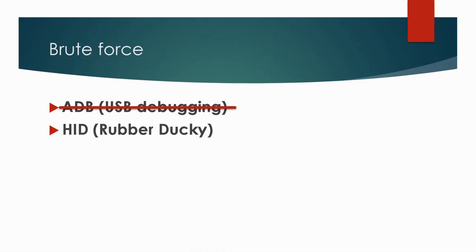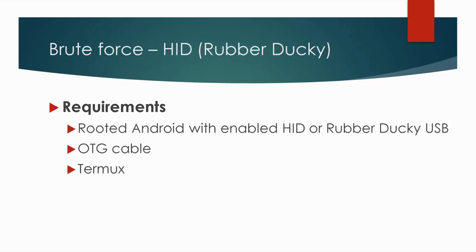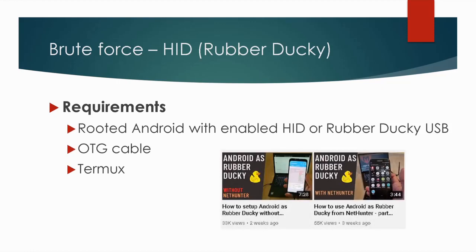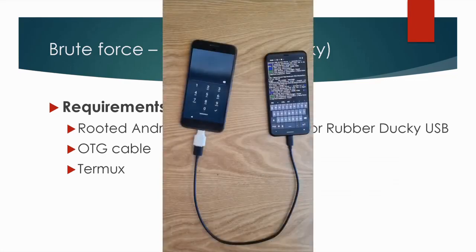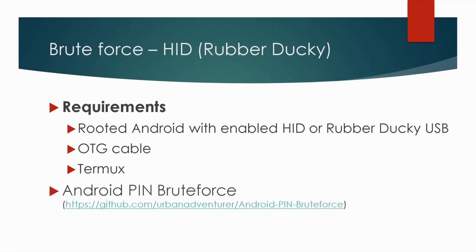We will focus on HID using either a rubber ducky or Android. HID — human interface device — means that the connected smartphone or USB device behaves as a keyboard to the targeted locked PIN-protected device. This keyboard sends exact key presses, which are actually PIN codes. There is no need to enable USB debugging or for the device to be rooted, since if you connect a keyboard to your device it will just work. The requirement is either a rooted Android smartphone with HID enabled, or a rubber ducky USB. The tool used is the Android PIN brute force tool available on GitHub, which is free and very handy.